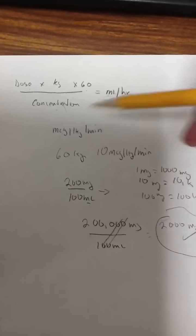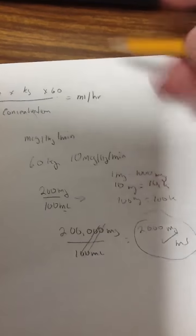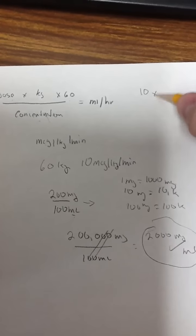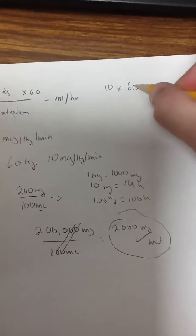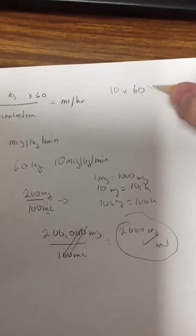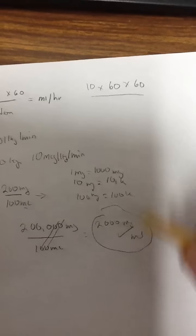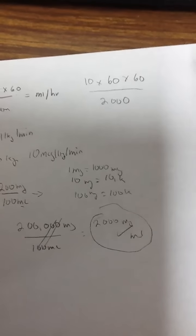So I go up to this formula here. I take the dose. I'll write it over here. The dose is 10 micrograms per kilogram per minute multiplied by the patient's weight, 60 kilograms, multiplied by 60, divided by my concentration, which I got down here, is 2,000.